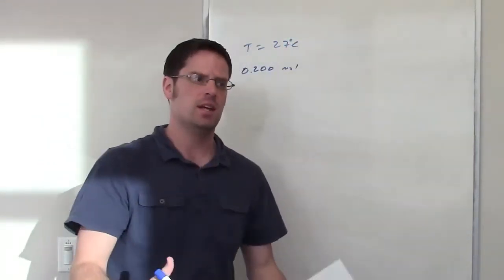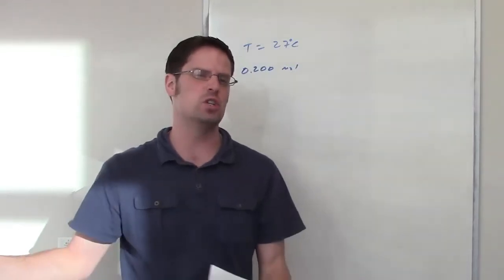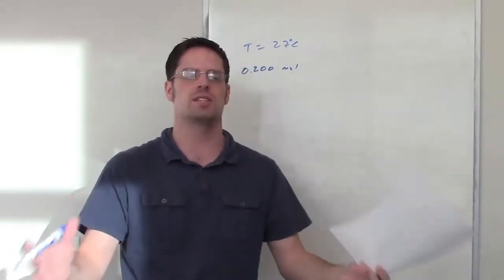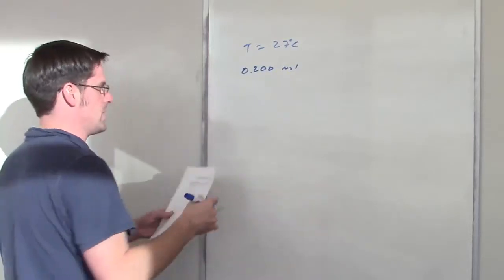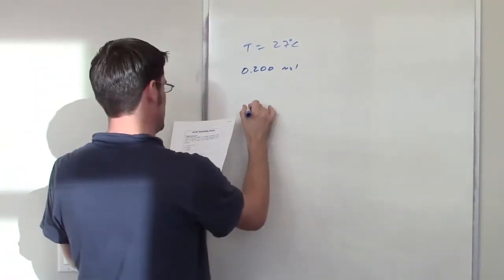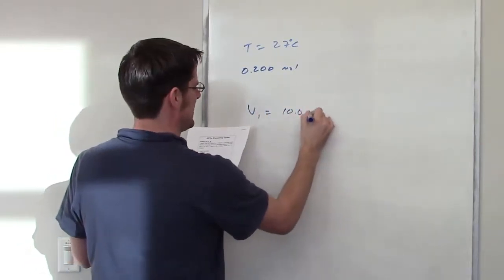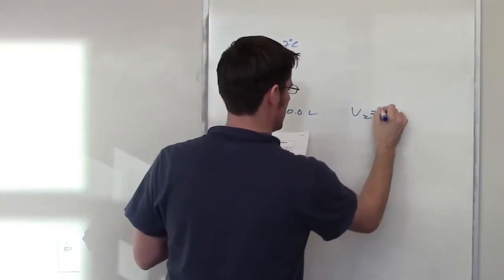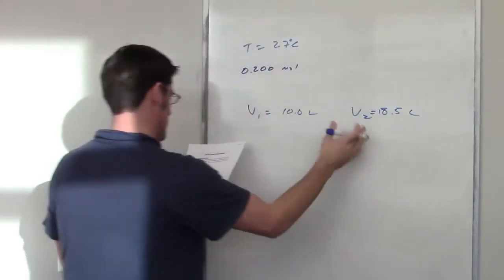Isothermal means that we increase it in a way so that there's no exchange of temperature from the surroundings to the system or vice versa. So we change its volume from 10 liters, so I'll write V1 equals 10 liters to 18.5 liters. So V1, V2.